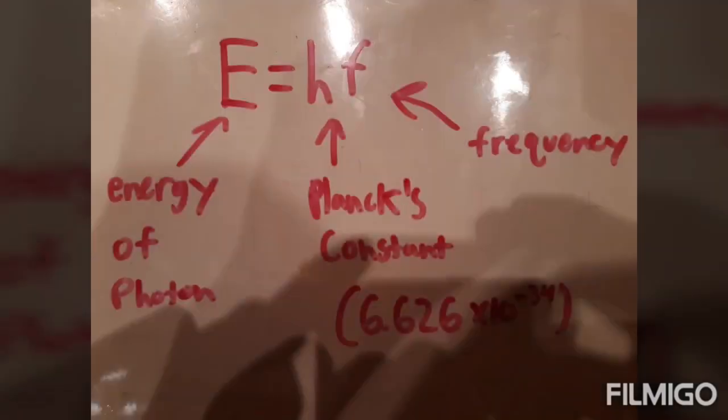If we use the equation E equals HF, we can find the energy of every color. E represents the energy of a photon, H is Planck's constant, and F represents frequency. Planck's constant is 6.626 times 10 to the negative 34th joule times seconds. All we need is the frequency of a color we want to find the energy for.